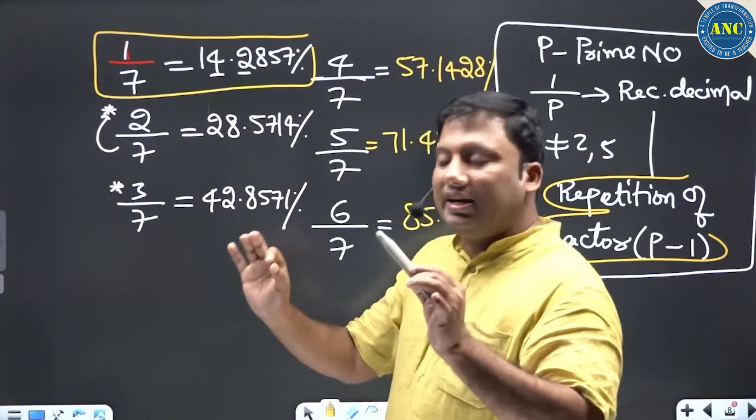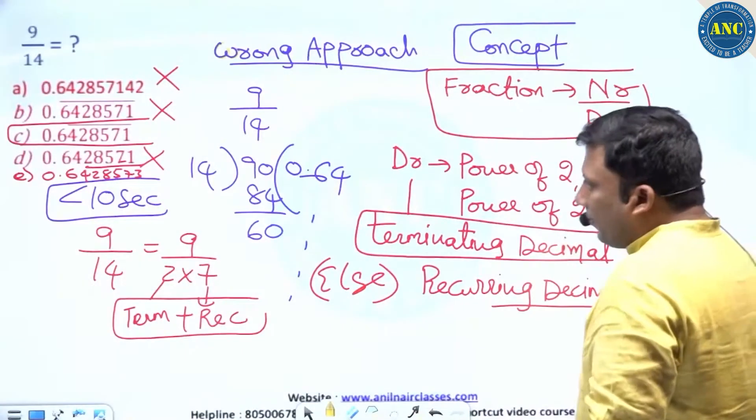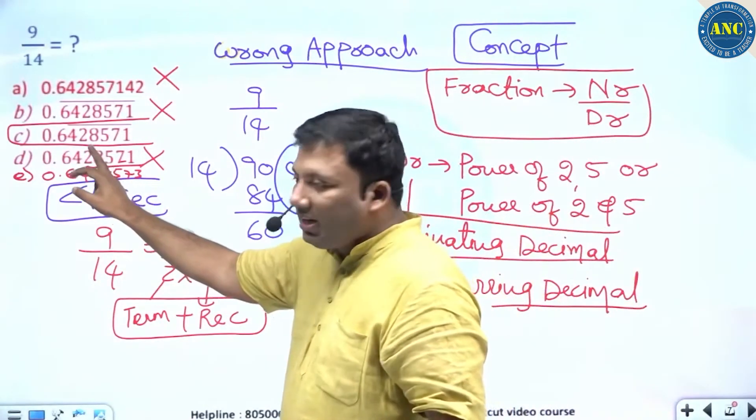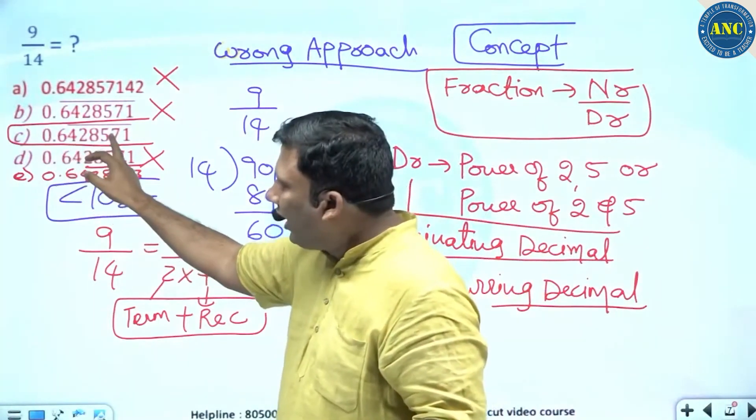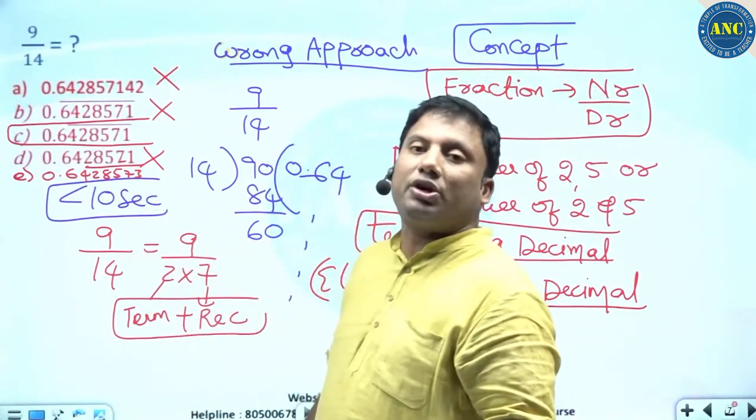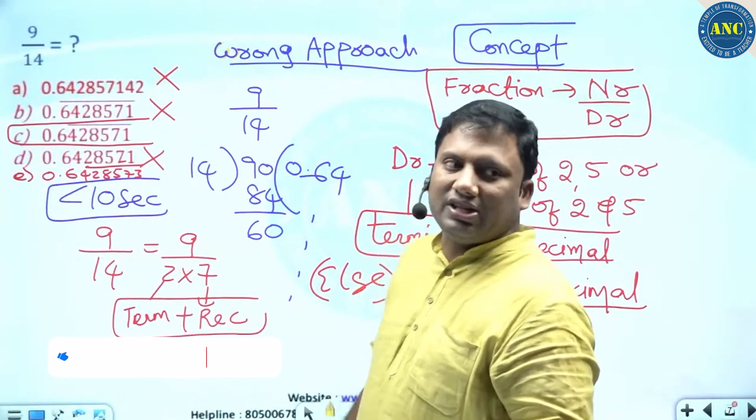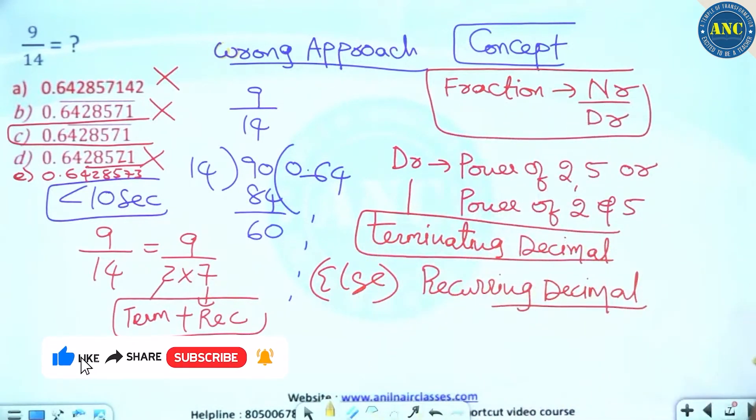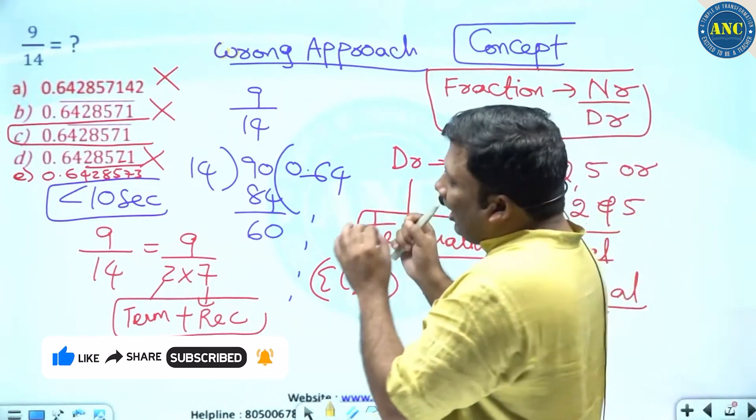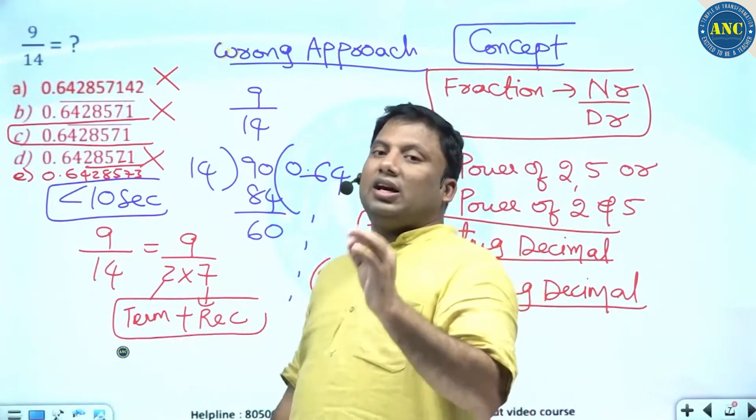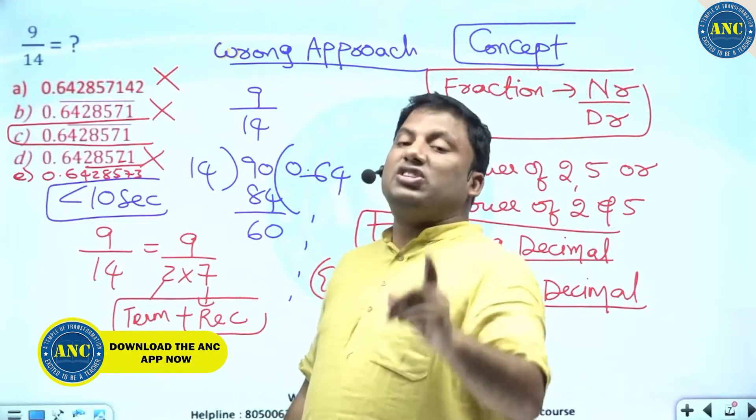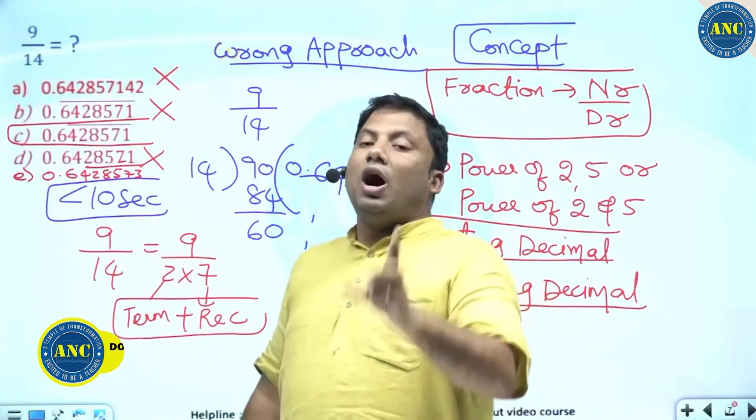I hope the idea is clear. What should be the repetition? 4, 2, 8, 5, 7, 1. If it's 4, 2, 8, 5, 7, 3, it's not possible. Eliminate it. First learning from this question: if the denominator contains a value which is only power of 2 or only power of 5 or combination of 2 and 5, then only I will get a terminating decimal.